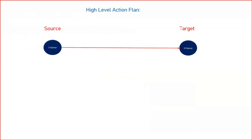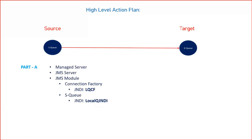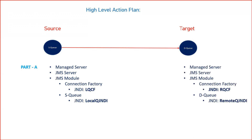The high-level action plan: you have a source and a target and need to send messages from source queue to target queue. There are two parts. Part A — you need to create a queue in your source and a queue in your target. As shown in a previous lecture, a queue has dependencies: first a managed server, then a JMS server targeted to the managed server, then a JMS module with a connection factory to create the connection, and finally the queue to hold messages.